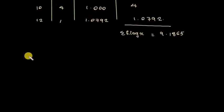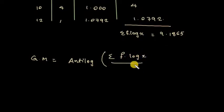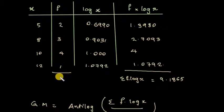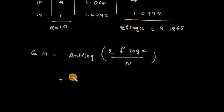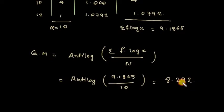Applying the formula, GM = antilog of (Σ f log x / N). The total frequency N = 2 + 3 + 4 + 1 = 10. So GM = antilog of (9.1865 / 10), and the answer is 8.292. This is the geometric mean of the given frequency data.